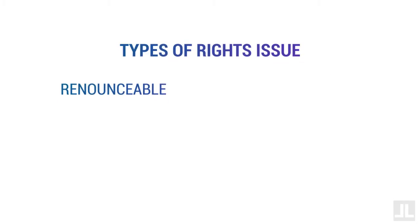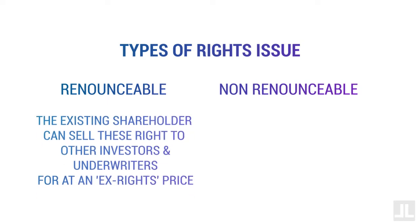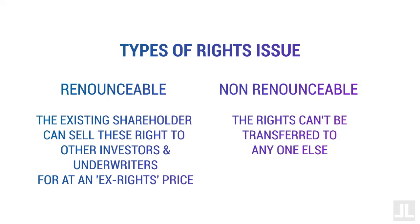Rights issues are of two types: renounceable and non-renounceable. In a renounceable rights issue, the existing shareholder can sell these rights to other investors and underwriters for an ex-rights price. However, in non-renounceable types of rights issue, the rights can't be transferred to anyone else.